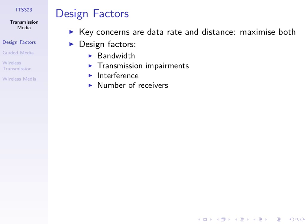In simple terms, we care about choosing media that gives us the data rate we want and covers the distance we want. For example, connecting computers in different rooms of a house - you choose between wired or wireless: a wired Ethernet LAN with cabling, or wireless Wi-Fi with an access point. You want a data rate high enough to support your applications, and the distance must be large enough to suit your environment.